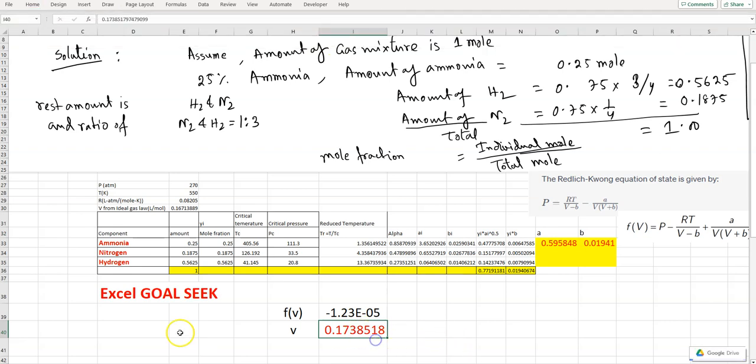This is the specific volume. That is the answer. Thank you. Now you know how to use Goal Seek.